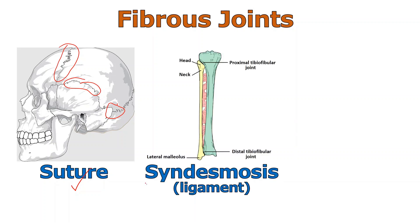The second class of fibrous joints is called a syndesmosis — plural syndesmoses. Most people know this term as ligament. Ligament holds bone to bone. We see three examples of syndesmosis here: the proximal and distal tibiofibular joints, which are ligaments holding one bone to another — they allow a tiny degree of flexibility but we call them synarthrotic. Another example is the interosseous membrane between the tibia and fibula — a membrane of connective tissue that is another example of a syndesmosis. You can find a similar structure between the radius and the ulna.